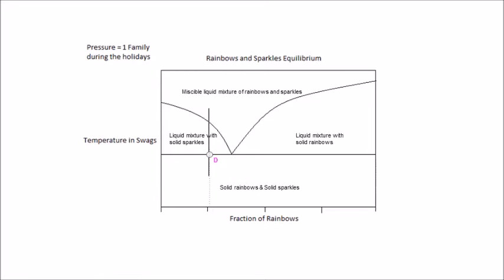The composition of the liquid phase is represented by the intersection between the horizontal line and the curve. In the liquid mixture, the fraction of rainbows is about 0.34, and that of sparkles is about 0.66. However, overall composition still is not changed.